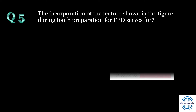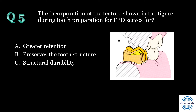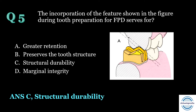Question number five: The incorporation of the feature shown in the figure during tooth preparation for FPD serves for — A) greater retention, B) preserves tooth structure, C) structural durability, or D) marginal integrity? The answer is C — structural durability. This is the functional cusp bevel, part of the occlusal reduction. It allows bulk of material, which is important to withstand the forces of occlusion — this property is called structural durability. Two key points: it is always given on the functional or supporting cusp, and it is 45 degrees inclined or parallel to the opposing surface.